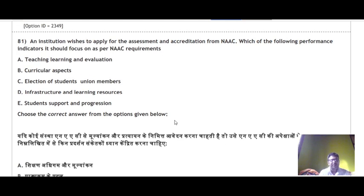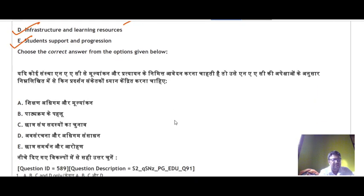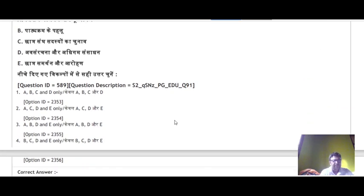Question 81: An institution applying for NAAC assessment and accreditation should focus on: teaching, learning and evaluation — true; curricular aspects — true; election of student union members — this is wrong; infrastructure and learning resources — true; student support and progression — true. So A, B, D and E are the correct performance indicators — the correct answer is option number 3.